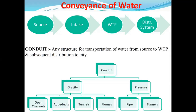So these are the two ways by which we can convey water from one point to another: gravity conduit and pressure conduit. In the gravity conduit we have four types: open channel, aqueduct, tunnels, and flumes.